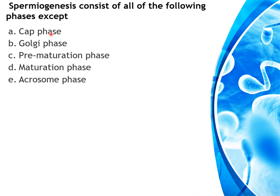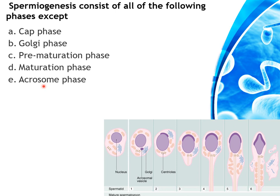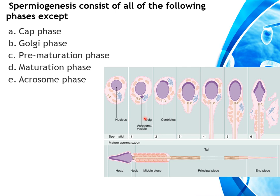Spermiogenesis consists of all of the following phases EXCEPT — Golgi phase, cap phase, prematuration phase, maturation phase, or acrosomal phase? In the Golgi phase, acrosomal granules form from the Golgi apparatus; these granules then form a cap covering the nucleus in the cap stage; the maturation stage follows with flagellum formation; then the acrosomal phase; and extra cytoplasm is extruded as the residual body. The prematuration phase does not exist. The answer is the prematuration phase.